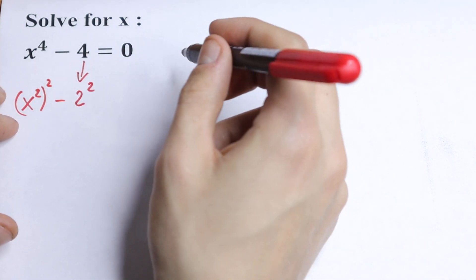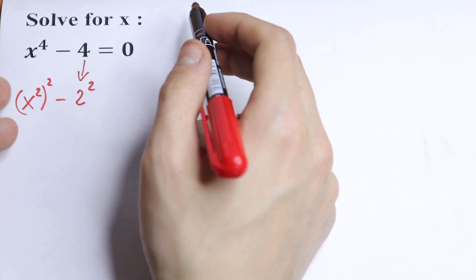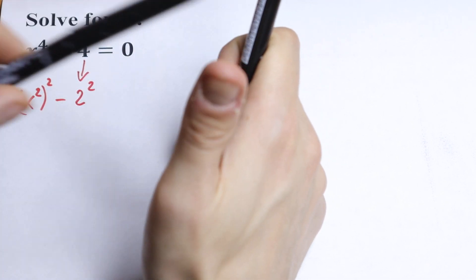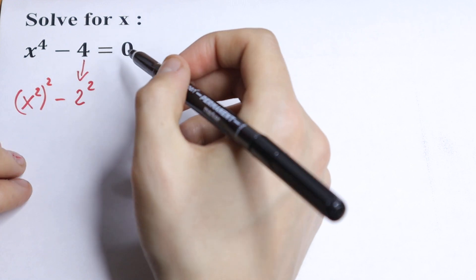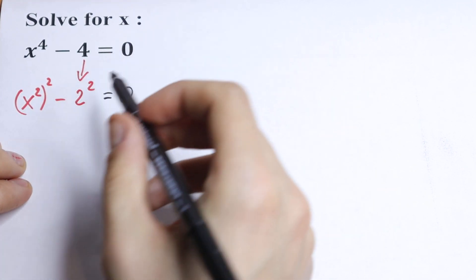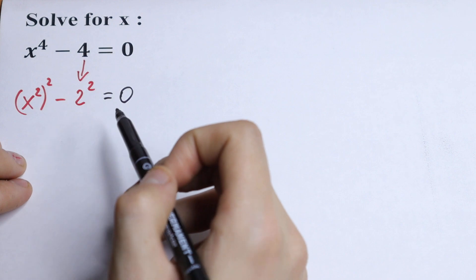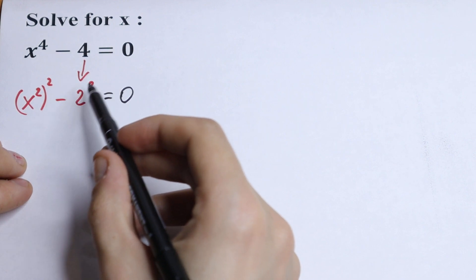Because I want to simplify this a little bit and it's a really good case, because we will have difference of squares and we can split it into an identity. So equal to 0, we have x square to the power second minus 2 square.